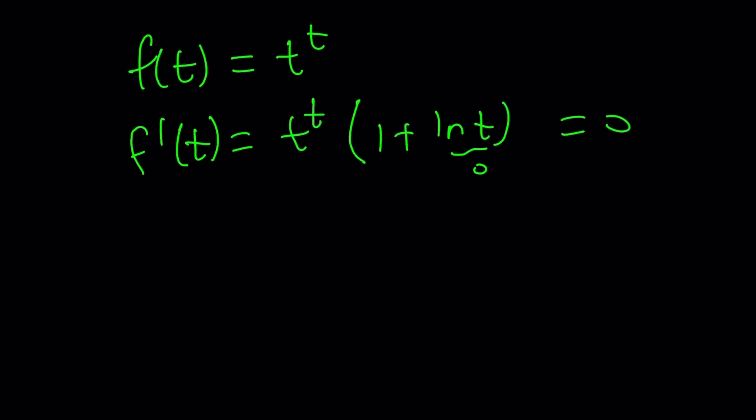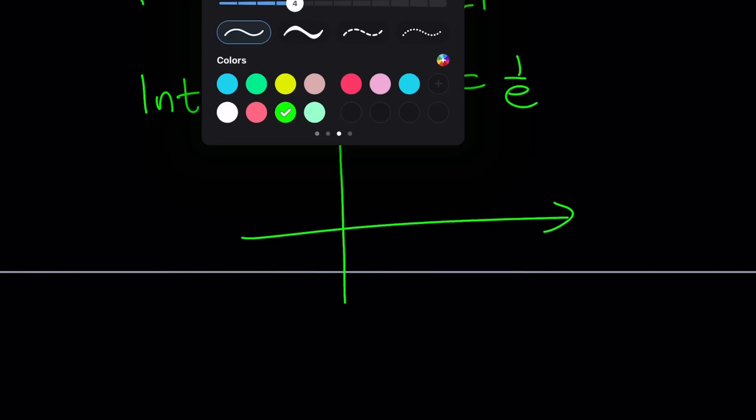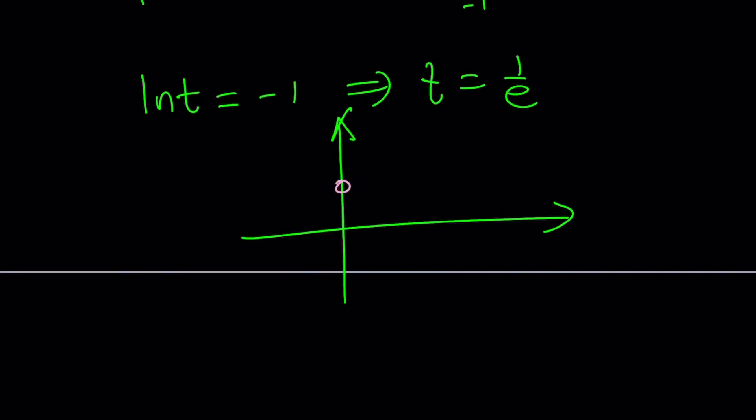ln t equals negative 1 gives you t equals 1 over e. And that's actually the point where the function has a minimum, because if you graph it, you're going to notice that it looks like this.